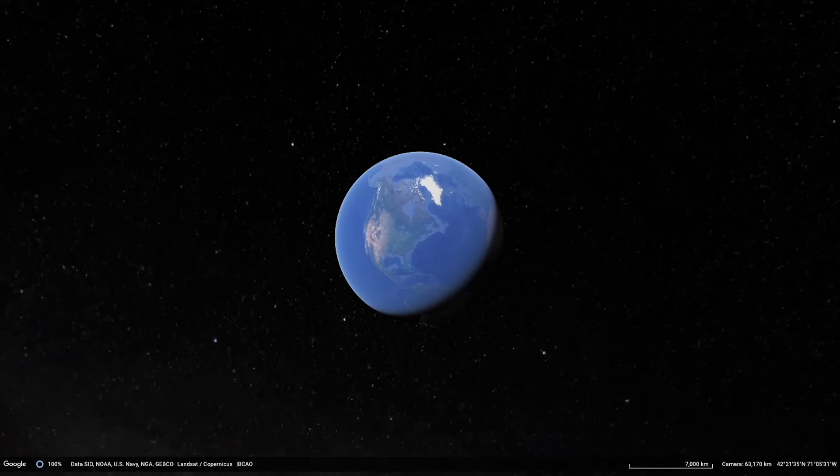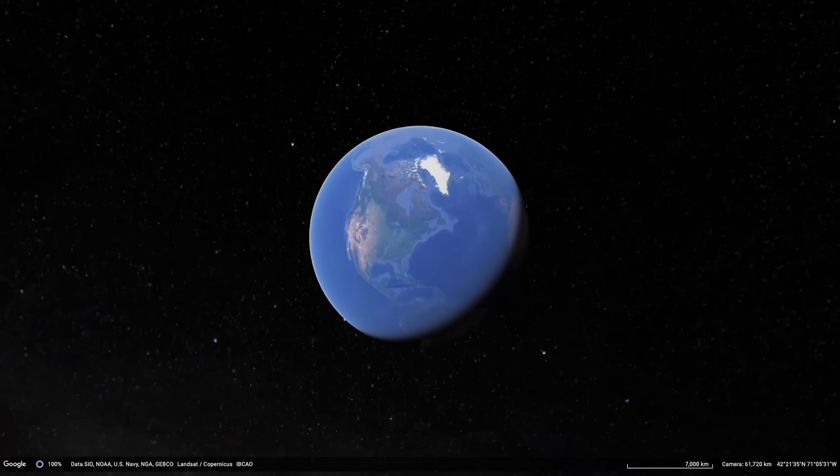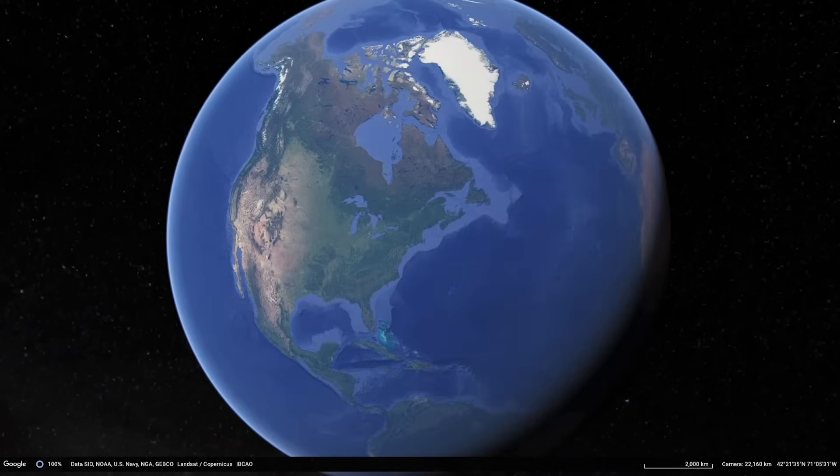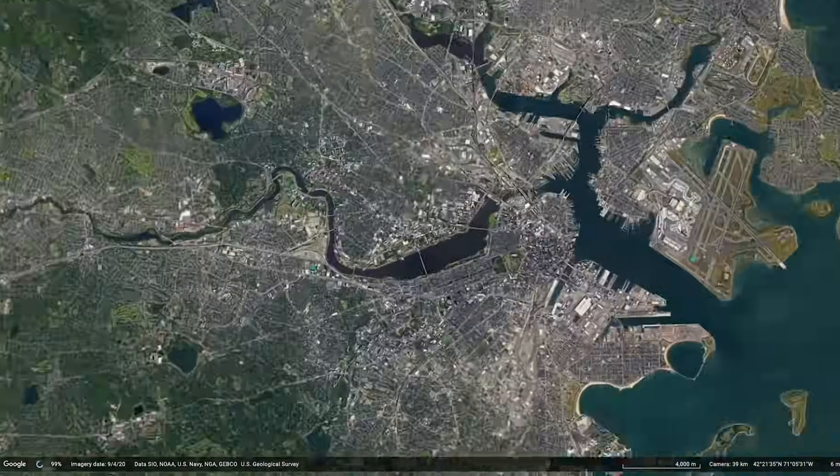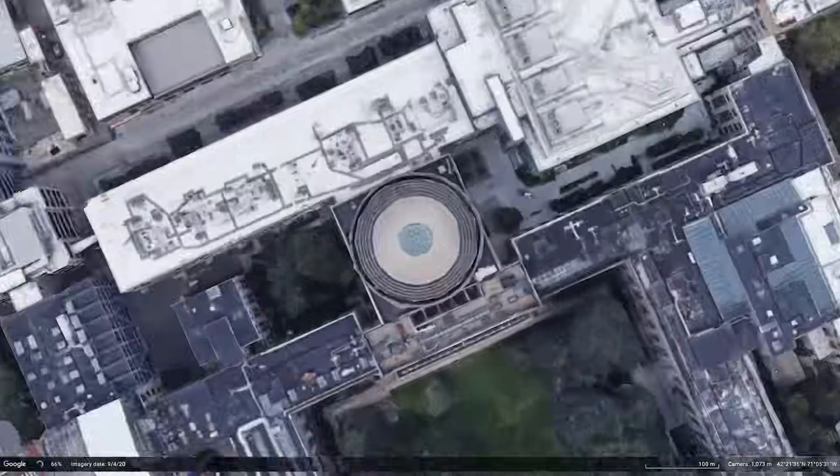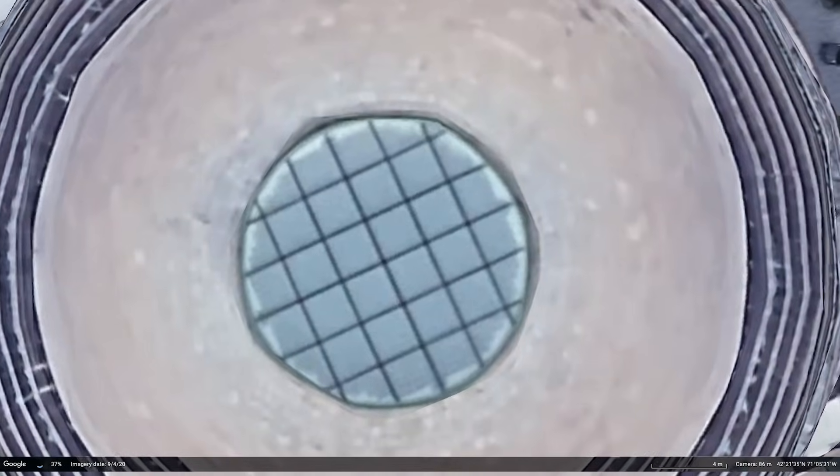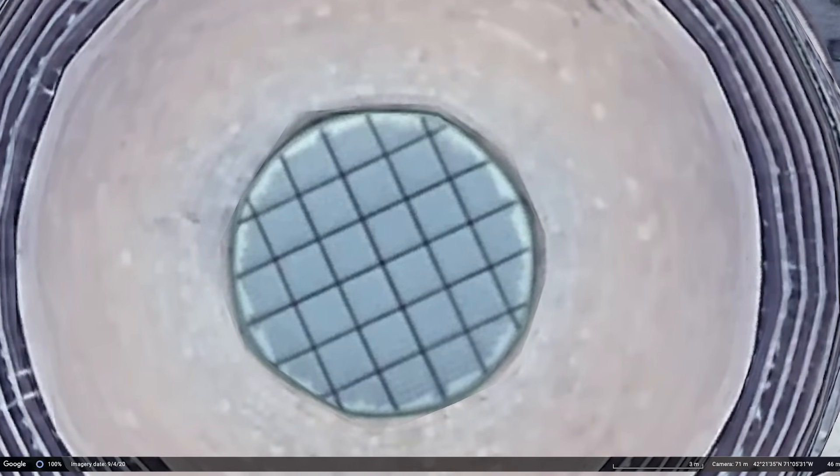Google Earth, in zooming from the Earth's radius to the MIT dome, increases the spatial resolution by about a factor of a hundred thousand. The same factor we saw earlier that successively brings us from a human height to the thickness of household aluminum foil, then to the size of an atom, and finally to the radius of a proton.